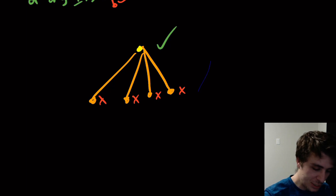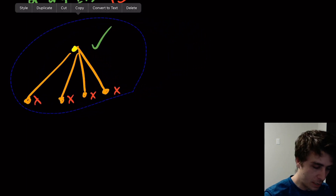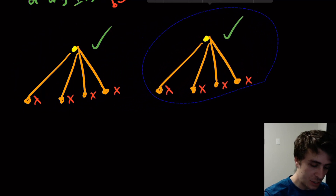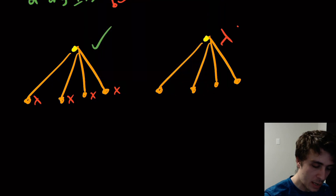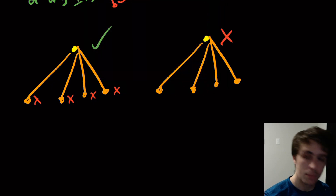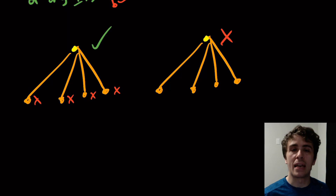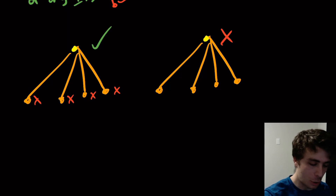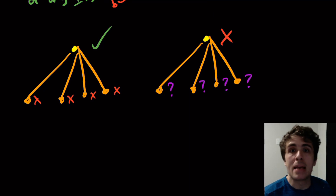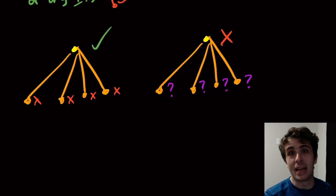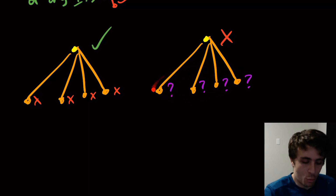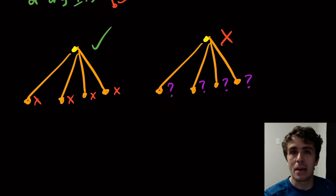That's situation one. Now let's consider situation two: we're definitely not going to put this vertex in. The question is whether we're going to include any of the neighboring vertices. We may or may not include them — we may include all of them or none of them.